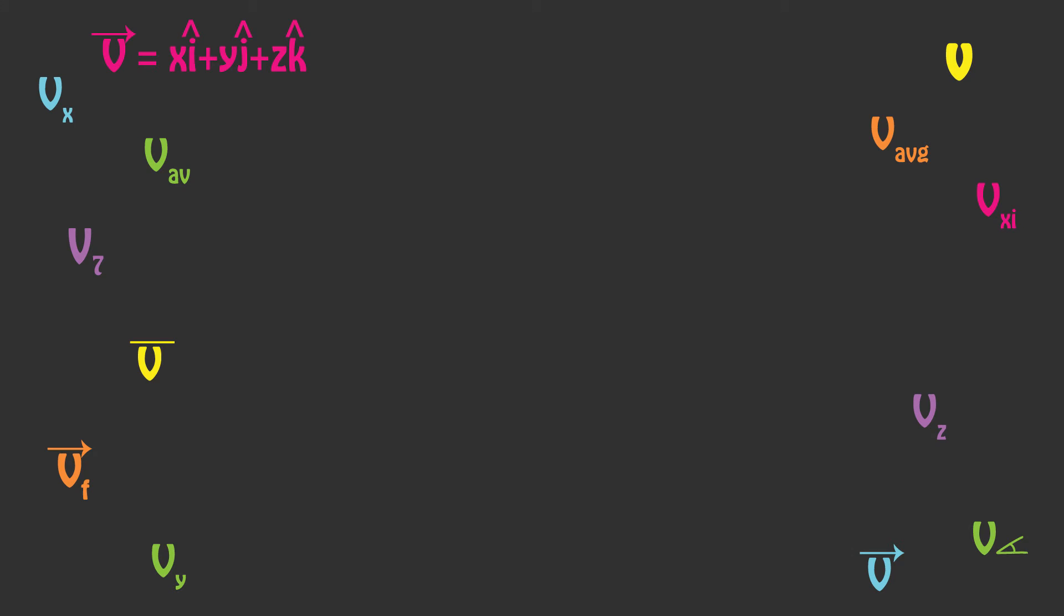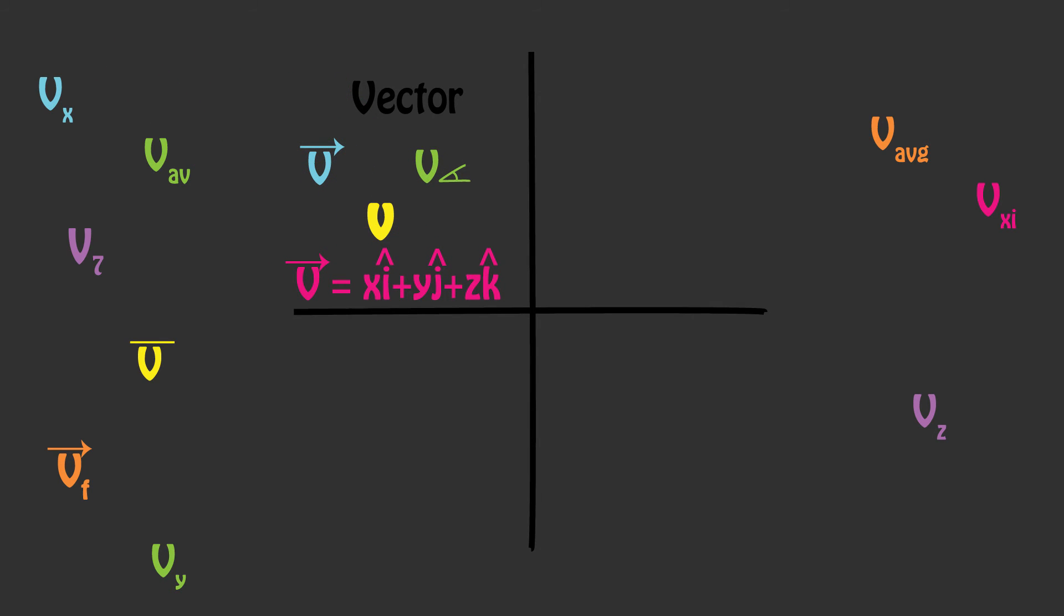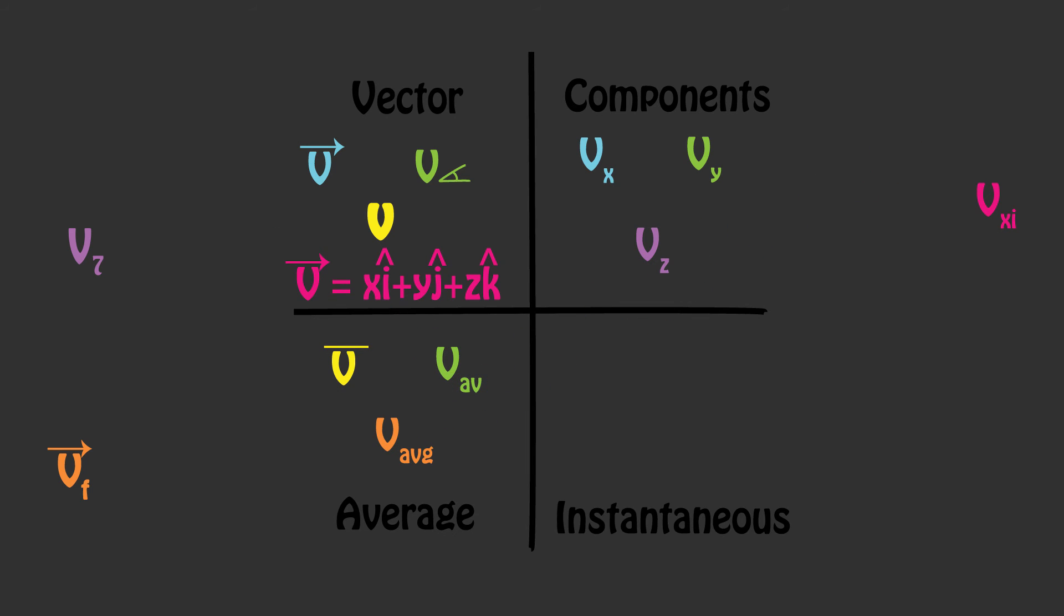We've used a lot of notation for velocity in this video, so let's sort out the four main types that we've seen. Velocity can be shown as a full vector quantity. These notations have arrows, angles, are bold, or show all the components of the vector. Velocity is sometimes only shown as a component. Often you'll see these written as v sub x, v sub y, or v sub z. These are all showing you velocity in one particular direction. In this video we use v sub x. Average velocity is usually denoted with a bar over top or with an av or an avg subscript. Instantaneous velocity can be shown as initial velocity, as a final velocity, or as a velocity at any given point. The notation will tell you what type of velocity you're working with.